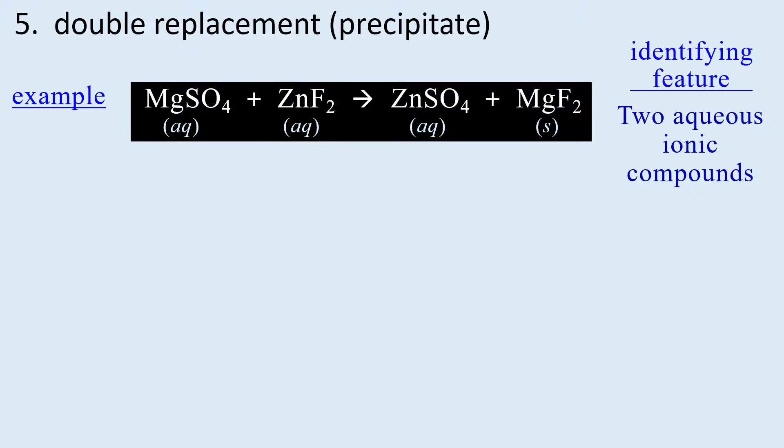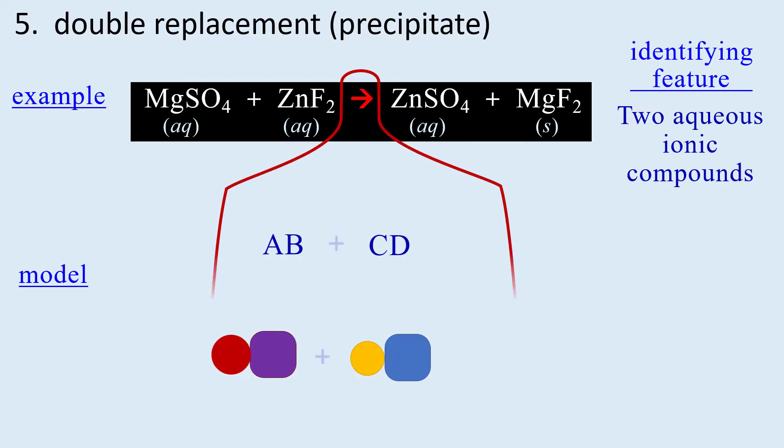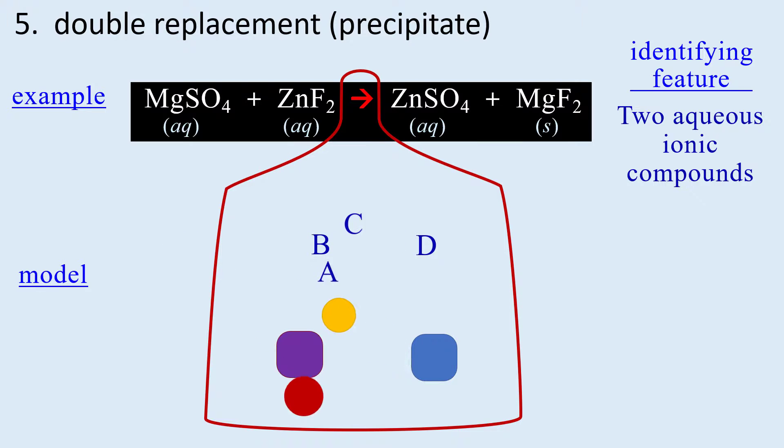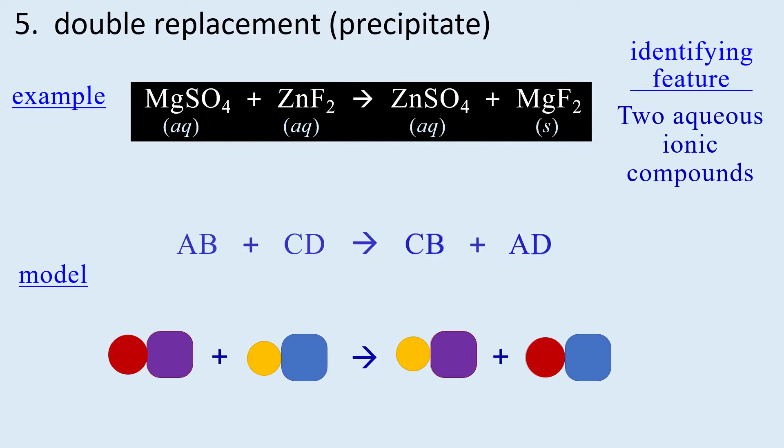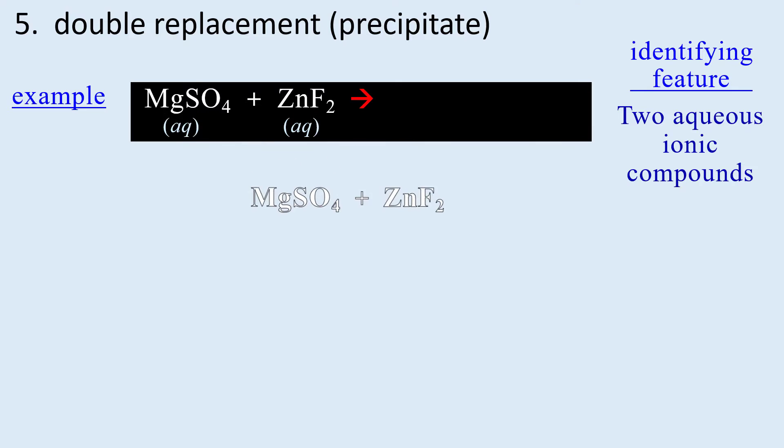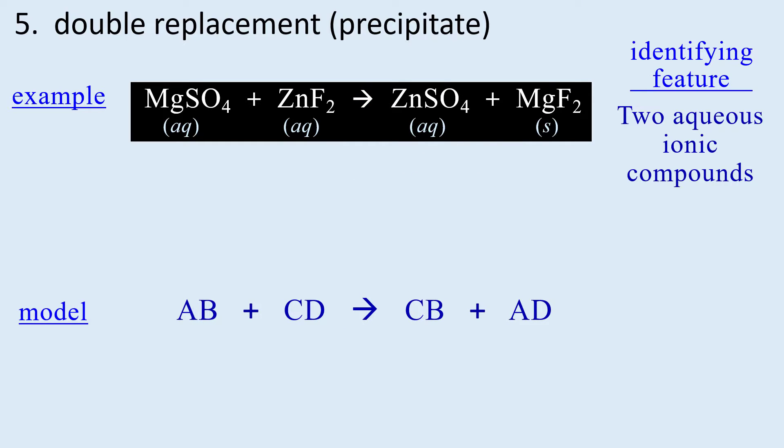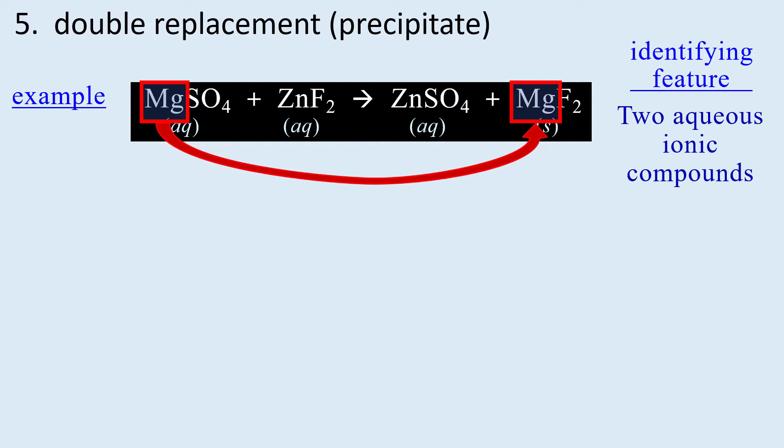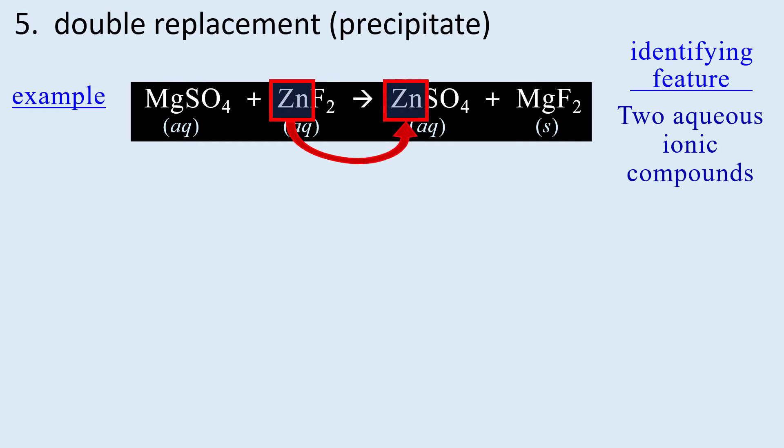You may have noticed from the products that the two metal ions switch places to become the products and this is what our model represents. The arrow represents the reaction, the ions switch places becoming products. The magnesium is now written with the fluoride on the product side and the zinc is with the sulfate.